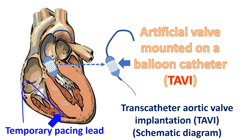Certain procedures which require pacing the heart at a fast rate to reduce movement, such as while implanting an artificial valve, are another reason for temporary pacing. Occasionally, pacing at a fast rate is also used for overdrive suppression of certain abnormal heart rhythms.